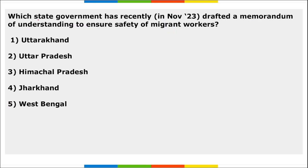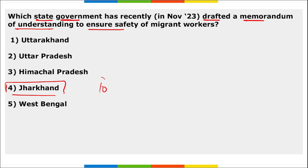Next: which state government recently drafted a memorandum of understanding to ensure the safety of migrant workers? It is Jharkhand. The Jharkhand government drafted an MOU to ensure the safety of migrant workers, planning to sign with 10 states that host a large concentration of laborers from Jharkhand.